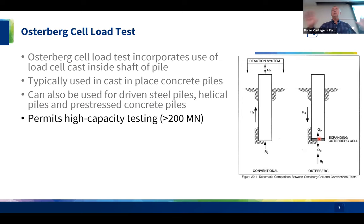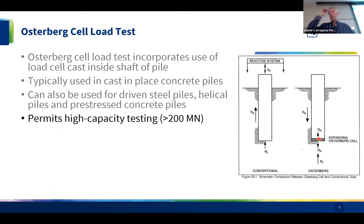One big advantage of the O-cell is it overcomes the limitation on axial load. With a conventional test, the reaction beam limits capacity — typically around 5 MN for a standard setup. We've tripled reaction beams to get up to 18 MN, but the O-cell allows testing at extremely high loads — they've done loads up to 200 MN and higher. This makes it essential when testing very large piles that physically can't be tested conventionally.